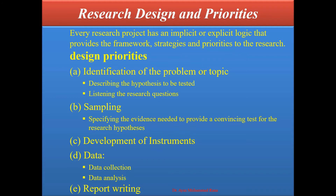The second step is sampling — specifying the evidence needed to provide a convincing test for the research hypothesis. Third is development of instruments: a researcher develops instruments according to requirement — questionnaires, observations, interviews, or whatever is needed. Then comes data collection, data analysis, and finally report writing.